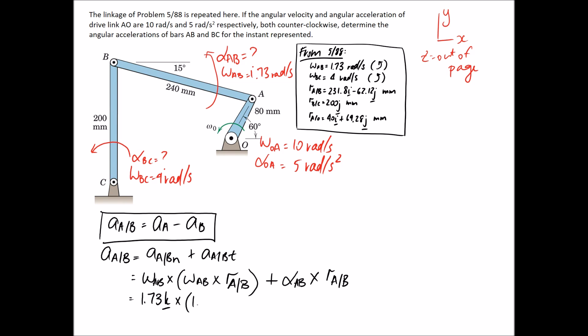So we know that this is equal to 1.73 radians per second. So it's in the positive direction, so it just gets a K. And multiplying this out, we've figured out the radius of A relative to B back up here in the previous question.